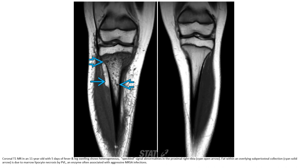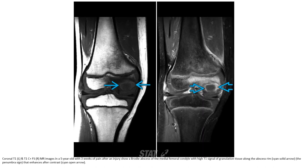This is due to marrow hemorrhagic necrosis associated with aggressive MRSA infection. T1 with contrast and fat saturation in a five-year-old with three weeks of pain after an injury shows a brodie abscess of the metaphysis, with high T1 signal of granulation tissue along the abscess ring.